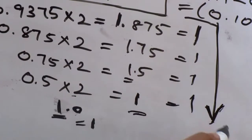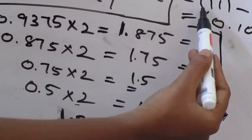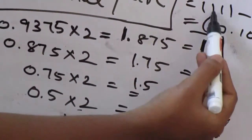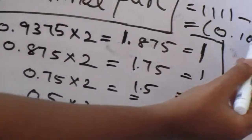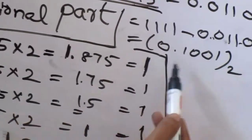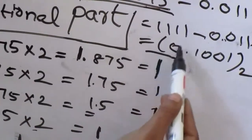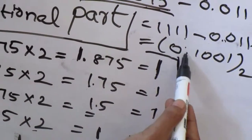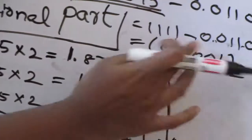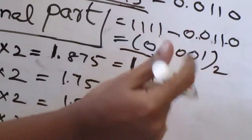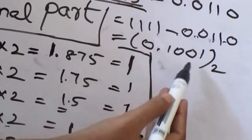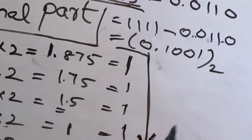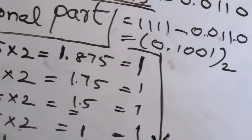Reading from top to bottom we get 1111, so 0.9375 in binary is 0.1111. Then 0.1111 minus 0.0110 — after binary subtraction we get 0.1001 base 2. Hope you are clear with this.